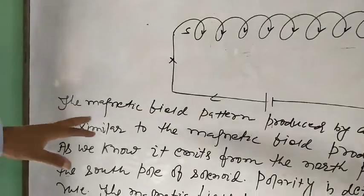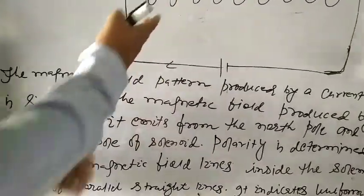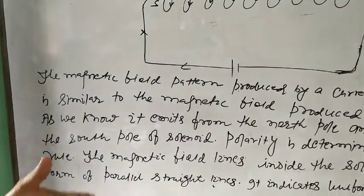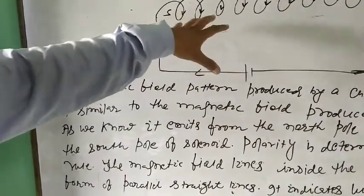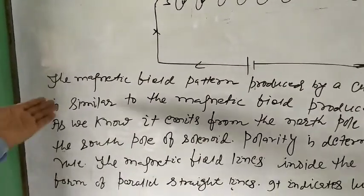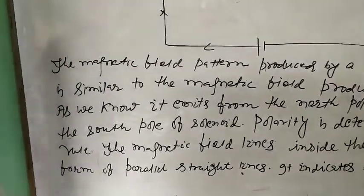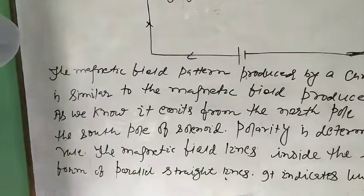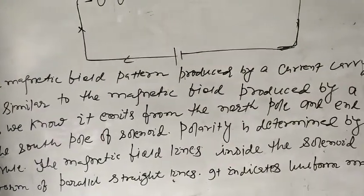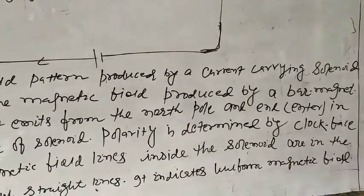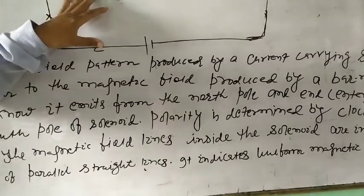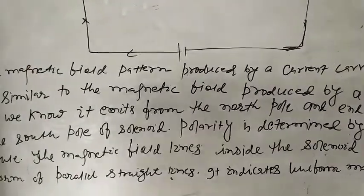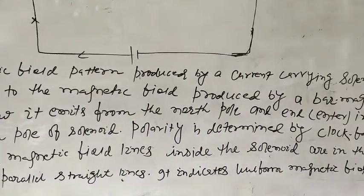The magnetic field pattern produced by a current carrying solenoid is similar to the magnetic field produced by a bar magnet.